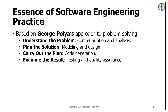Step one: understand the problem — this is where communication and analysis come in. Step two: planning the solution — this involves modeling and design. Step three: carry out the plan — the actual code generation. Step four: examine the result — this involves testing and quality assurance to make sure the solution works.